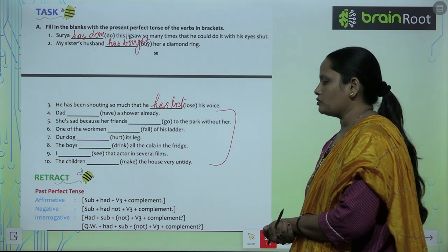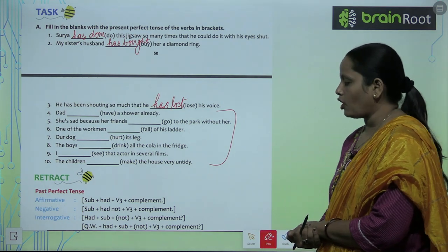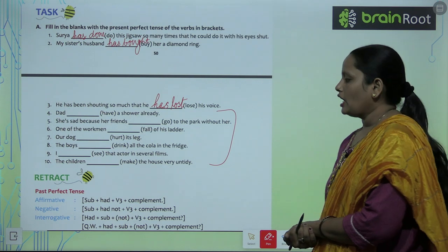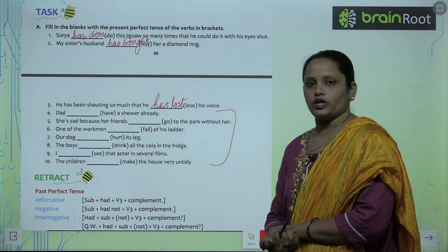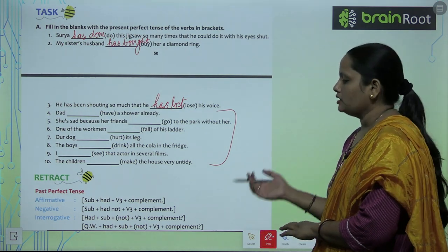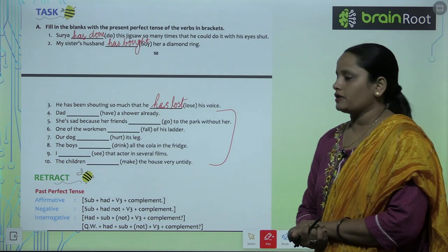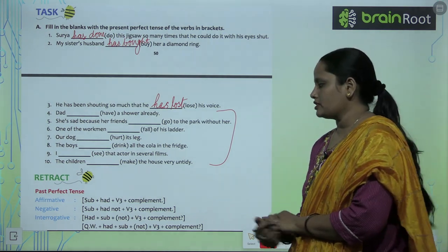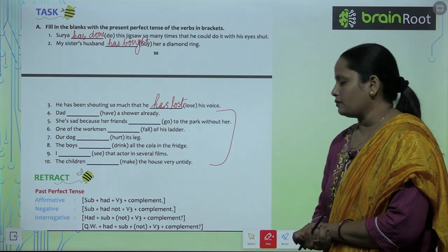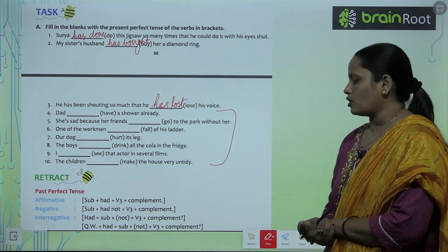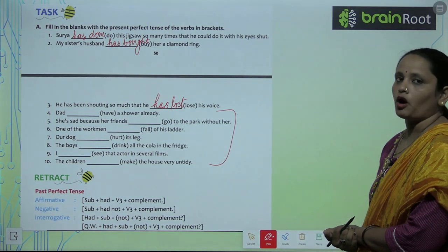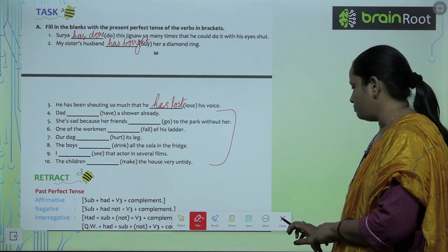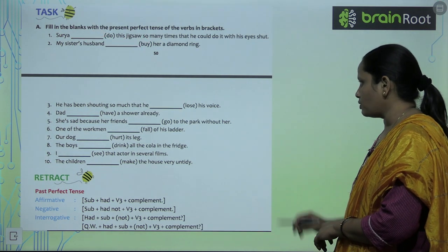In negative sentences we use: subject plus had not plus verb's third form and then complement. For interrogative sentences: had plus subject plus not plus verb's third form and complement. For question words: question word plus had plus subject plus not plus verb's third form and then complement. These are the rules to be followed in past perfect tense.